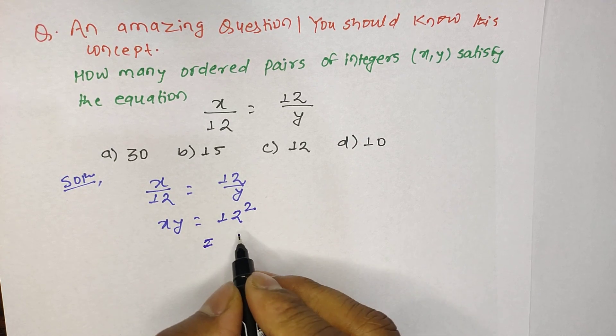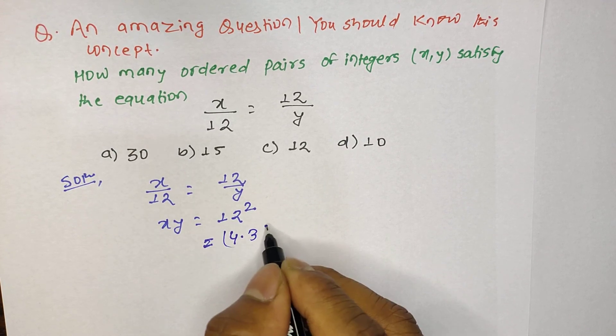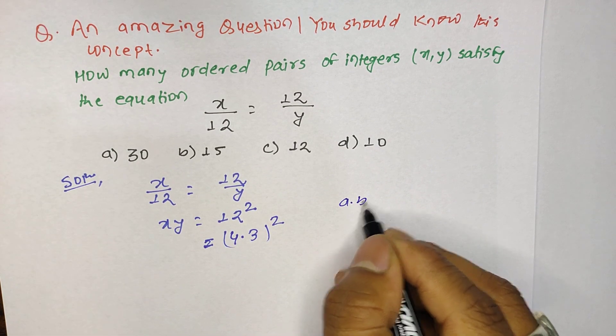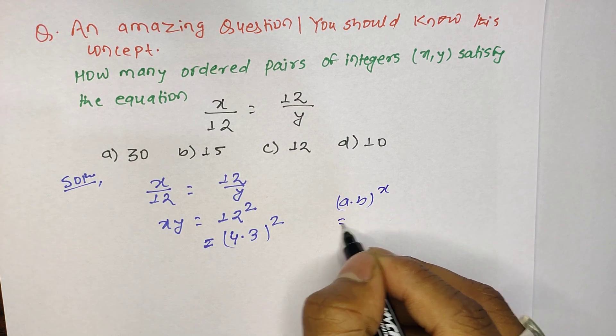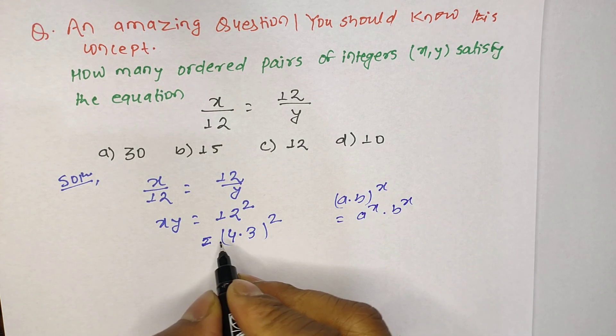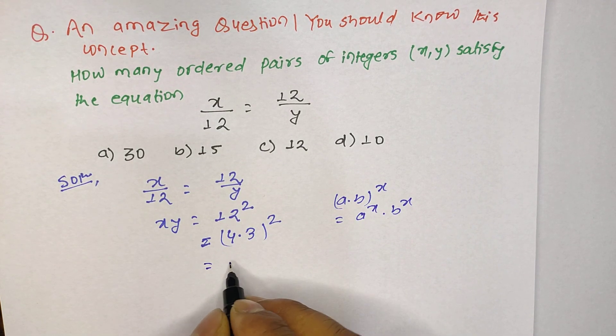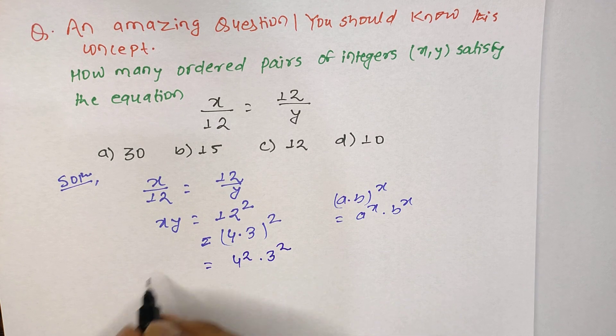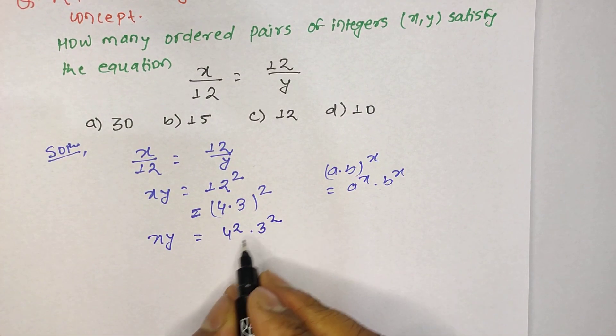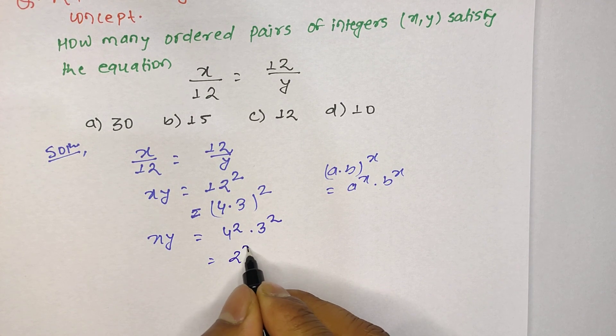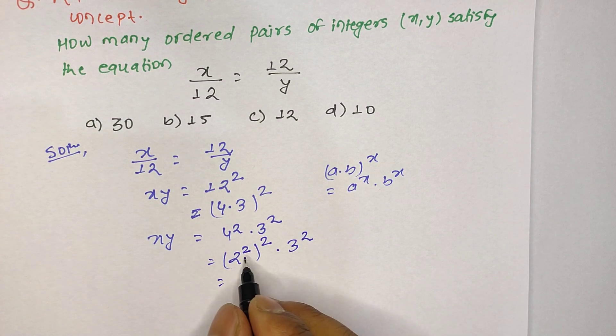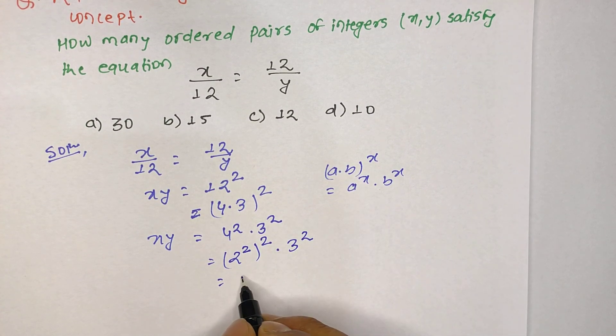It is 12 power 2, and as you know that 12 can be written as product of 4 times 3 to the whole power 2. You know that a times b to the power x can be written as a power x times b power x. So 4 power 2 times 3 power 2, and 4 can be written as 2 power 2 to the whole power 2 times 3 power 2.